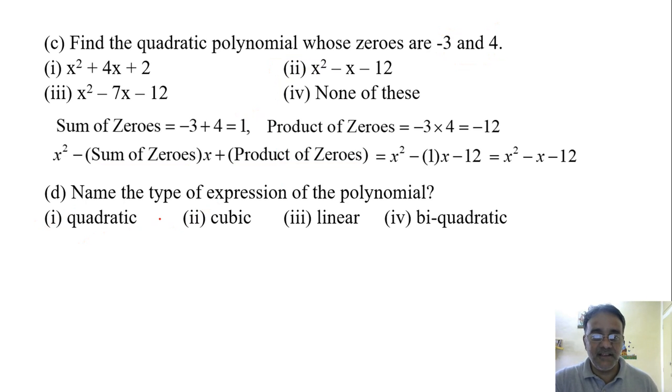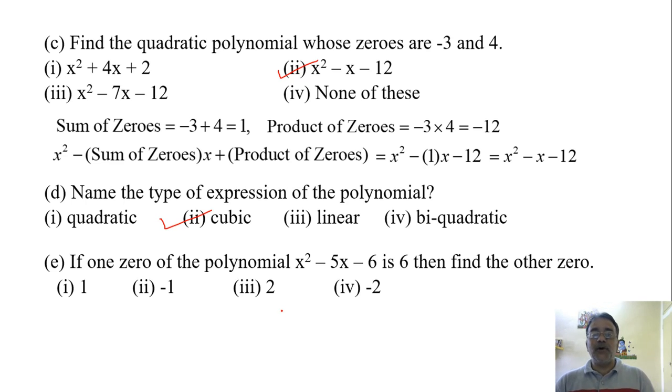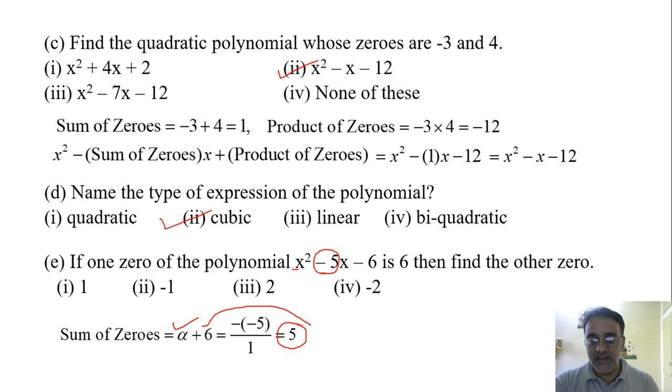Now the last one: if one zero of the polynomial x² minus 5x minus 6 is 6, then find the other zero. This can be done using the concept of sum of zeros. Sum of zeros is minus b by a, which is minus of minus 5 by 1, that is 5. Let the other zero be alpha. So alpha plus 6 equals 5. If you shift 6 to this side it becomes minus 6, so 5 minus 6 equals minus 1. The correct option is the second one.